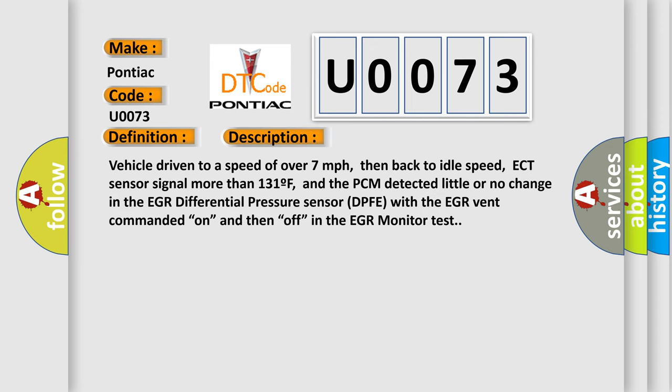Here is a short description of this DTC code. Vehicle driven to a speed of over 7 miles per hour, then back to idle speed, ECT sensor signal more than 131°F, and the PCM detected little or no change in the EGR differential pressure sensor DPFE with the EGR vent commanded on and then off in the EGR monitor test.